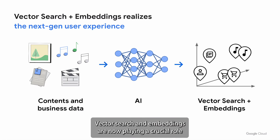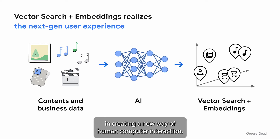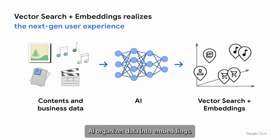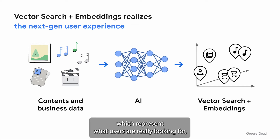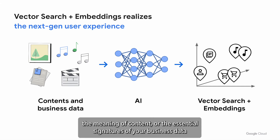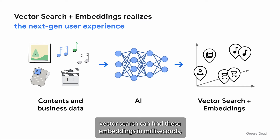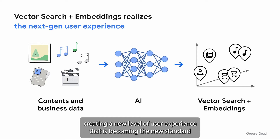Vector search and embeddings are now playing a crucial role in creating a new way of human-computer interaction. AI organizes data into embeddings, which represent what users are really looking for — the meaning of content, or the essential signatures of your business data. Vector search can find these embeddings in milliseconds, creating a new level of user experience that is becoming the new standard.